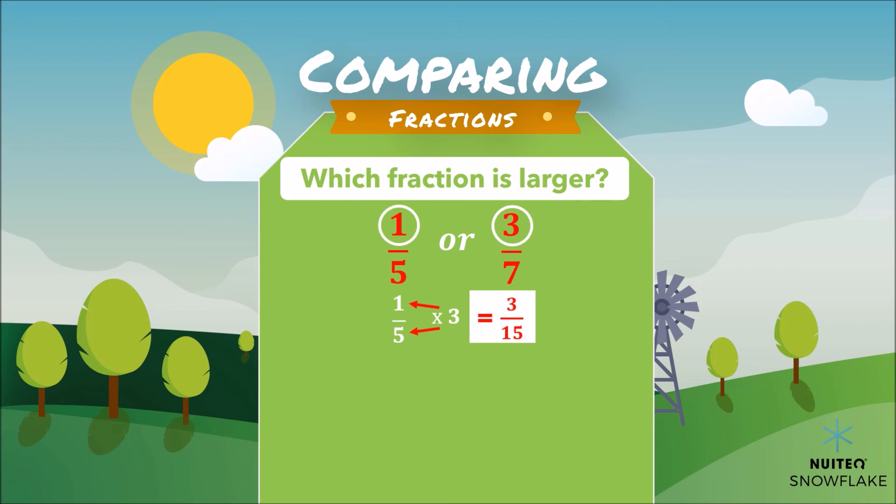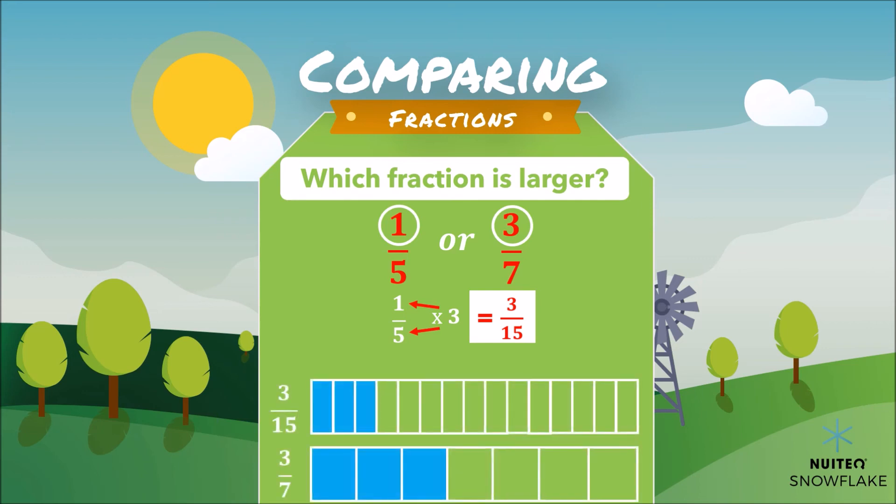Now let's look at the models for both fractions. 3 fifteenths are less than 3 sevenths. Or we can rewrite that as 3 sevenths are greater than 3 fifteenths. Interesting, right?